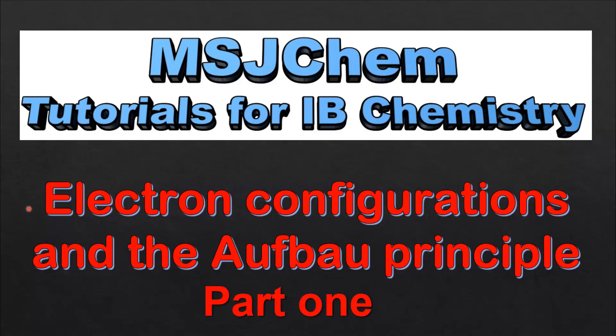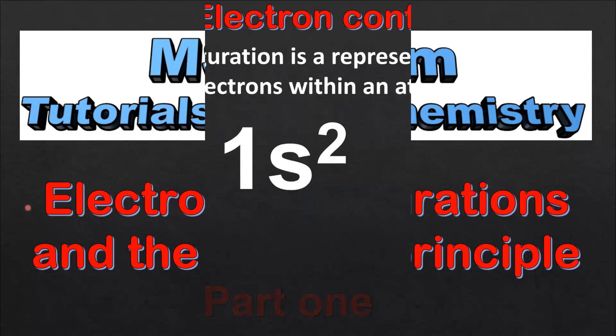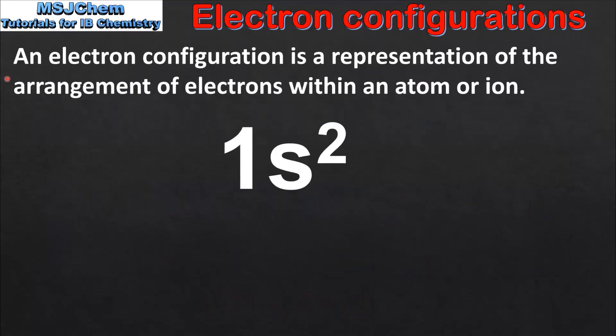This is MSJ Chem. In this video I will be looking at electron configurations and the Aufbau principle. An electron configuration is a representation of the arrangement of electrons within an atom or ion.